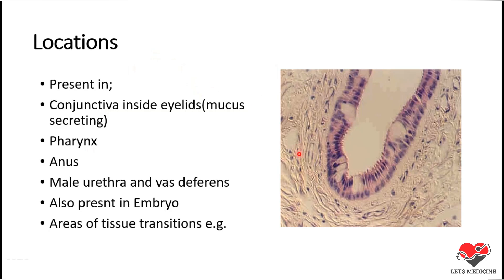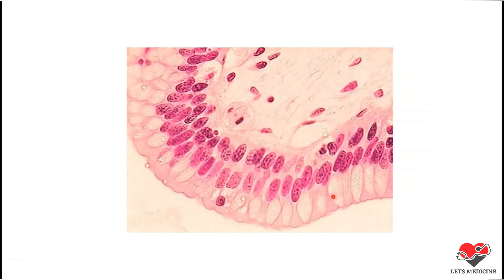Here you can see an image showing the stratified columnar epithelium. You can see the two levels of nuclei showing the double-layered structure. We recognize the multiple layers of epithelium because of these nuclei. This is one layer of stratified columnar epithelial cells, and this is the second layer. A closer view clearly shows the elongated-shaped nuclei of the stratified columnar cells.